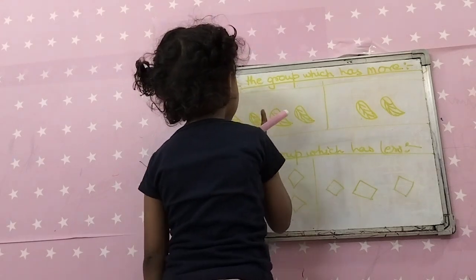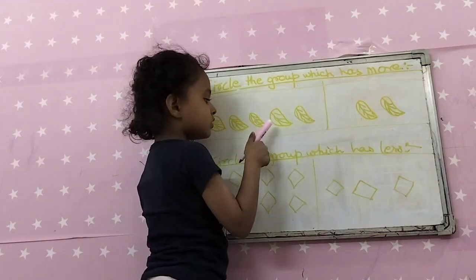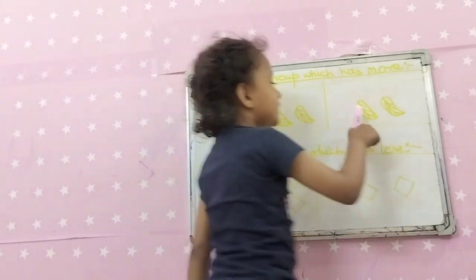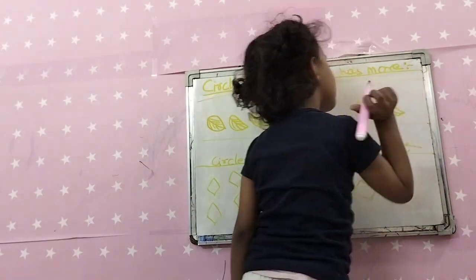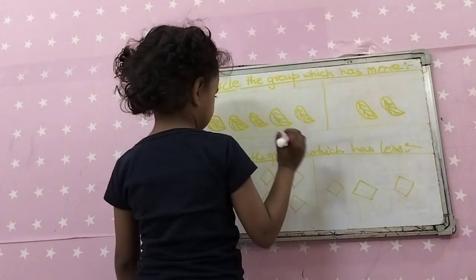1, 2, 3. 1, 2, 3, 4, 5. 1, 2. We are going to count this one.